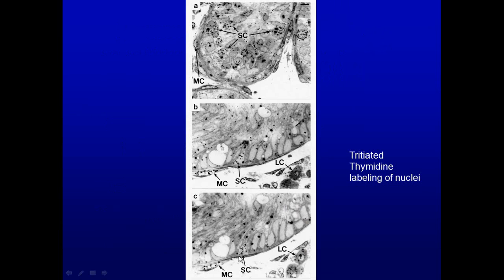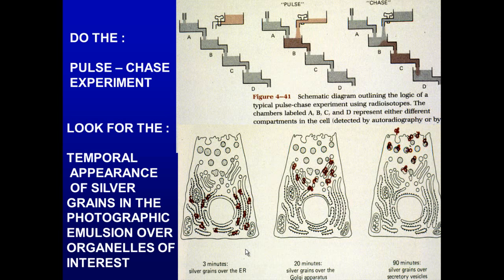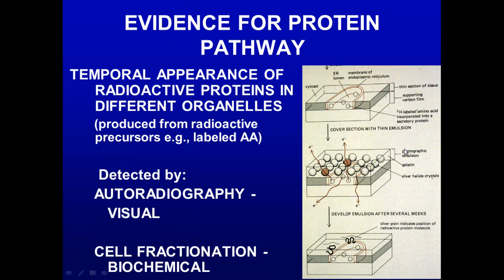Here we see 3H-thymidine labeling. These are serial sections of the same nucleus, and those dots indicate that this nucleus incorporated 3H-thymidine during cell division — specifically during the synthesis phase. Remember the pulse-chase experiment, where you provide a radioactive component and then a non-radioactive component to follow development throughout the cell. We also look at the temporal appearance of events, setting up an experiment and then sacrificing rats at different times to evaluate parameters, minimizing the number used by timing sacrifices when results are expected.